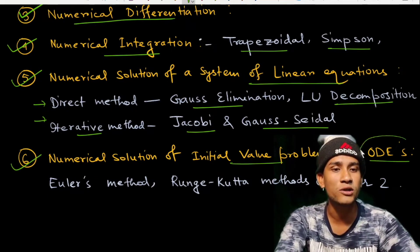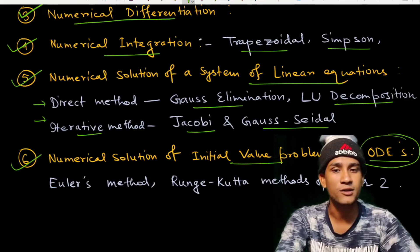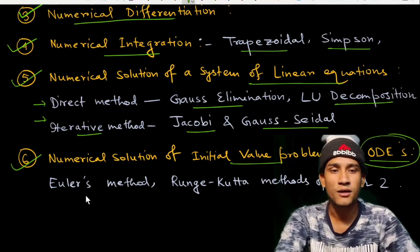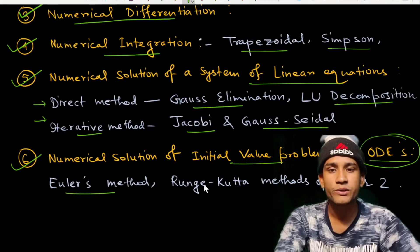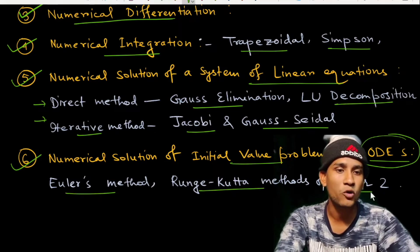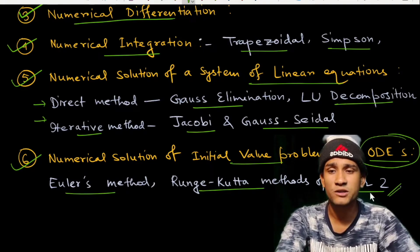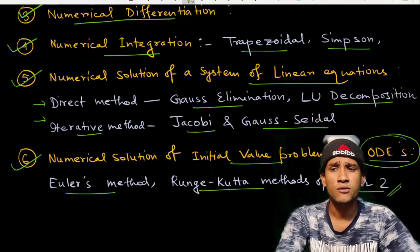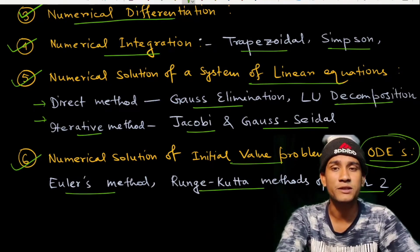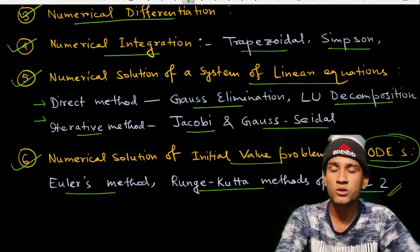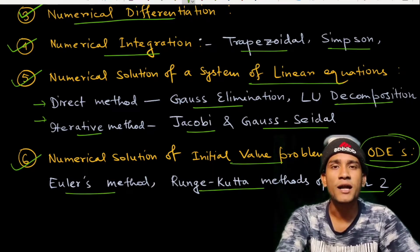Chapter six is the numerical solution of initial value problems of ODEs only — there is no PDE section. Inside this chapter, we have Euler's method and Runge-Kutta methods of order two. Sometimes questions also come using Picard's method and Euler's backward/forward differentiation. These are the main topics of GATE mathematics numerical analysis.